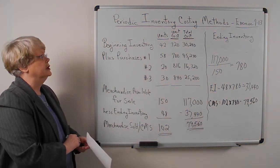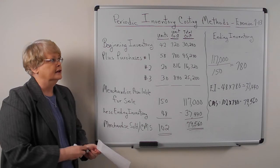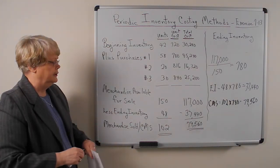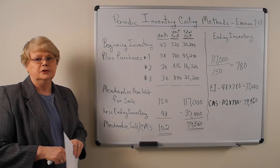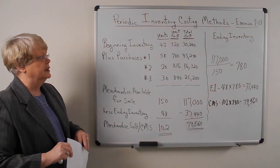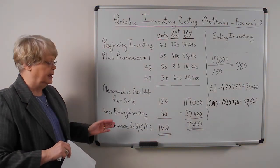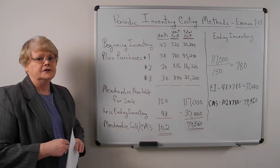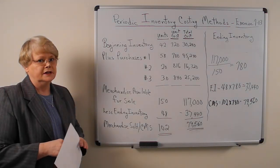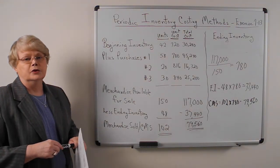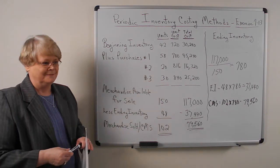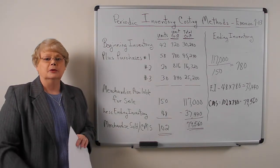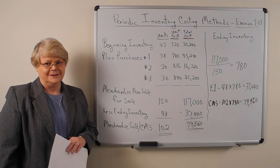So we've gone over the periodic calculation of ending inventory and cost of merchandise sold using LIFO, FIFO, and weighted average — the three cost flow assumptions that you would use, unless of course you're using specific identification. In the next video, we'll talk about the perpetual inventory system.